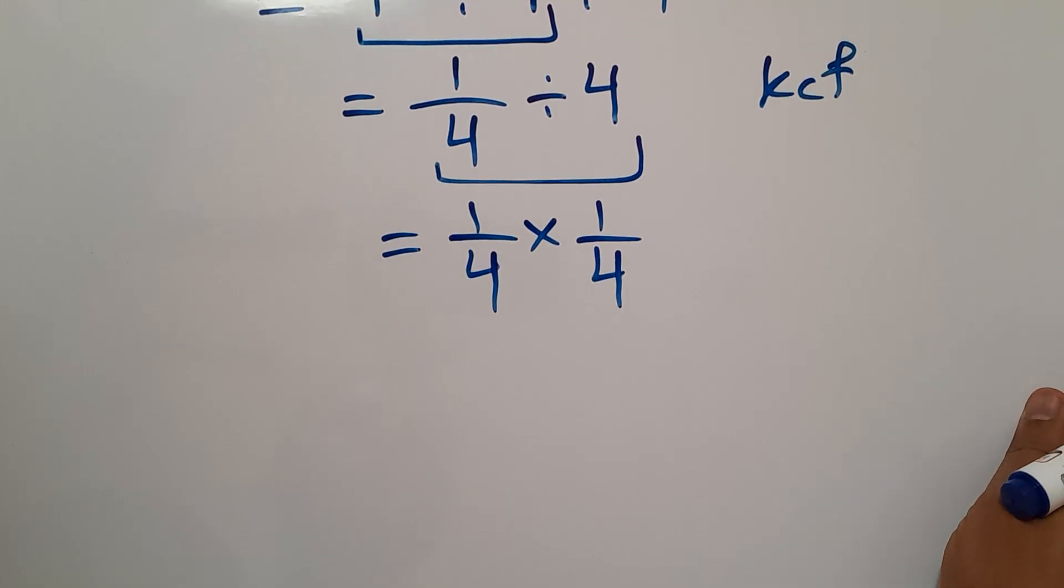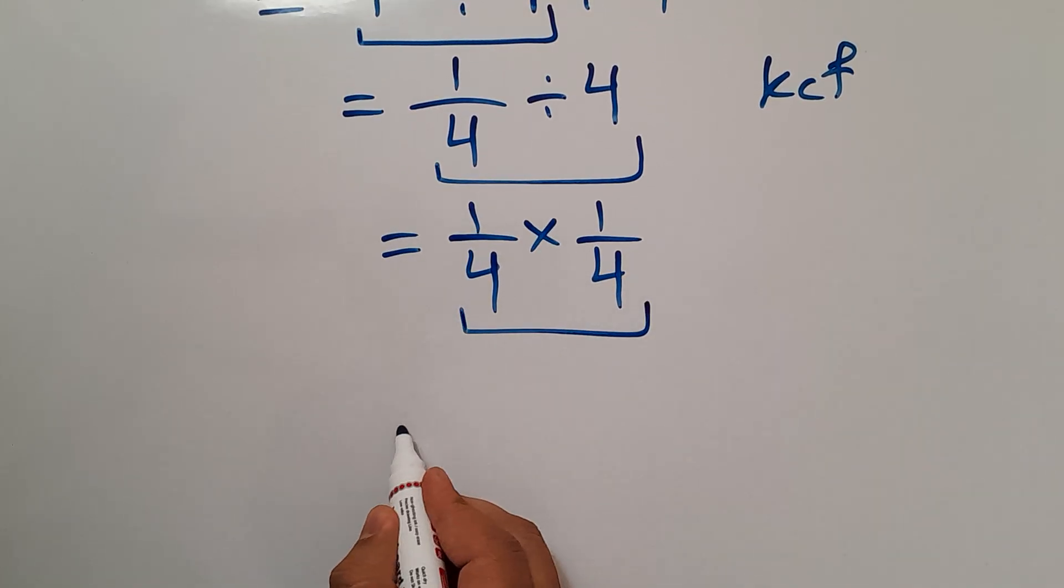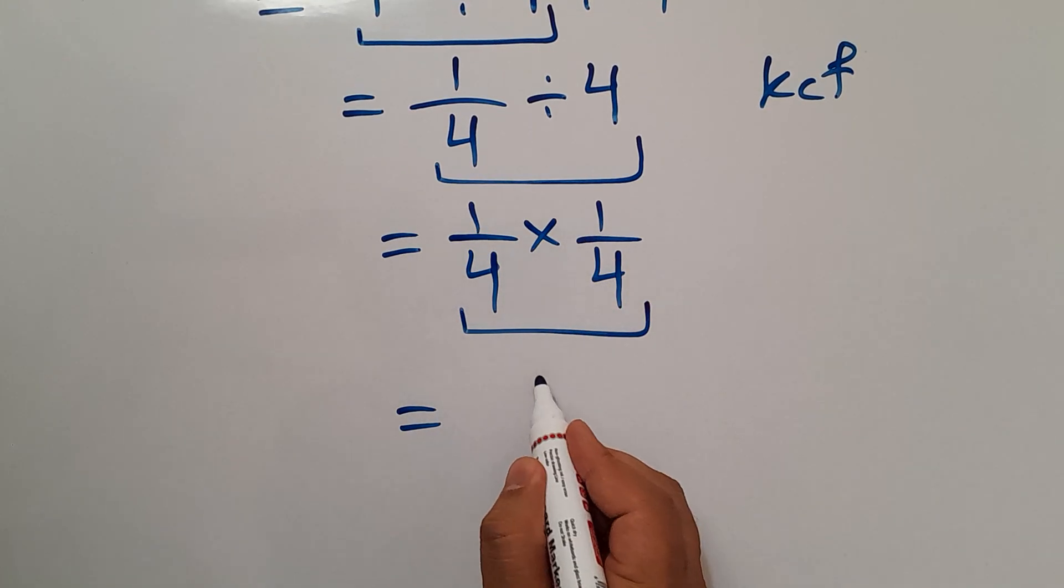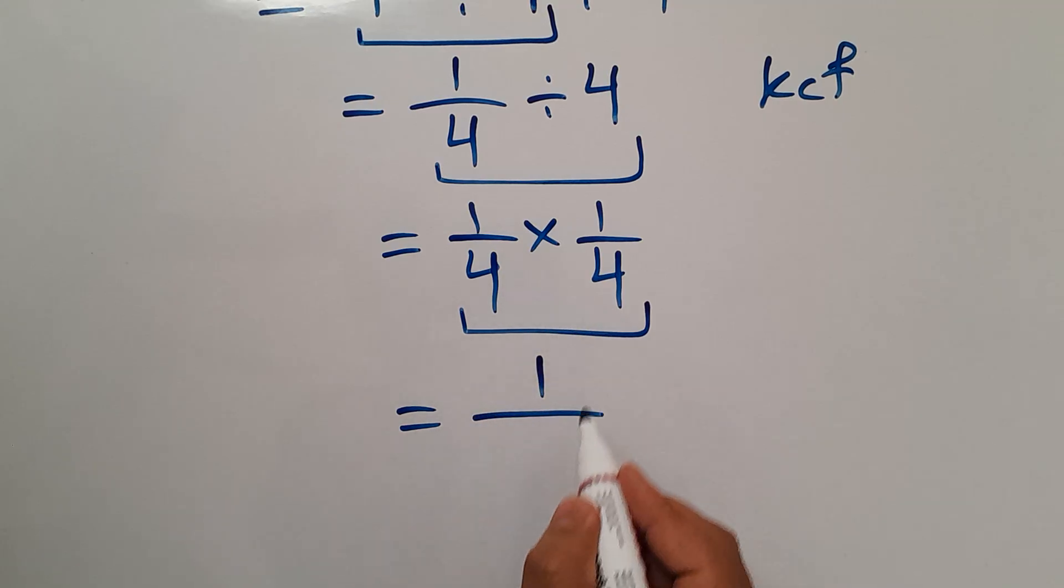And this is equal to 1 times 1 gives us 1 over 4 times 4 equals 16. So our final answer to this problem is just 1 over 16.